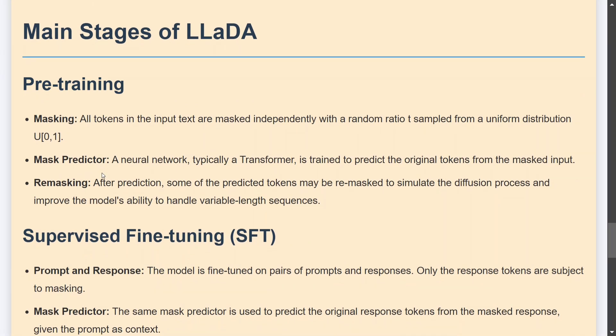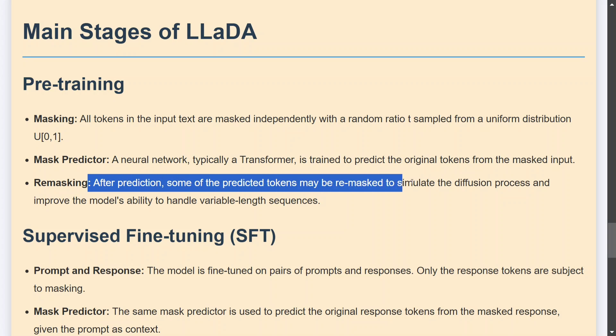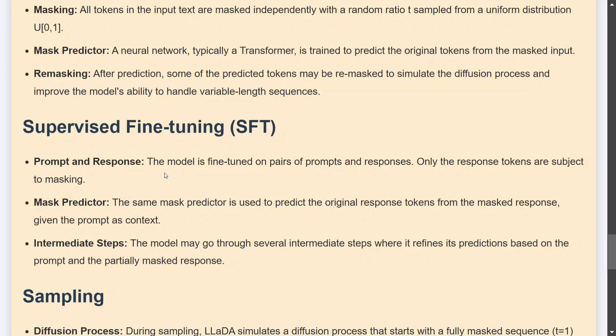Pre-training: masking happens, mask prediction happens, and remasking happens after prediction. Some of the predicted tokens may be remasked to stimulate the diffusion process. Supervised fine-tuning, I'm just wrapping this out a bit, again repeating the same stuff that we have read for transformer training.